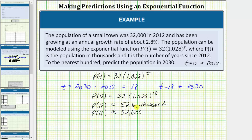Let's write our answer as a complete sentence. The prediction for the population in 2030 is approximately 52.6 thousand or 52,600.